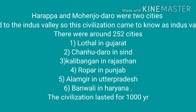The major sites include: first, Lothal in Gujarat; second, Chanudaro in Sindh; third, Kalibanga in Rajasthan; fourth, Ropar in Punjab; fifth, Alamgir in Uttar Pradesh; and sixth, Banwali in Haryana. The civilization lasted for about 1,000 years.